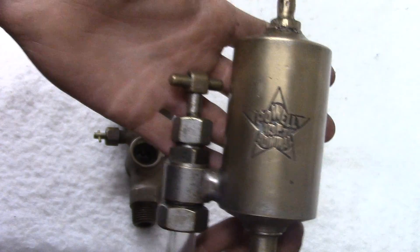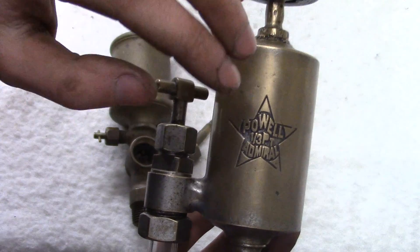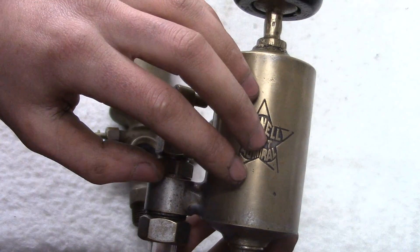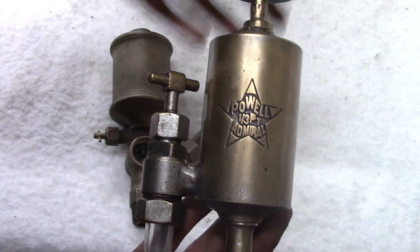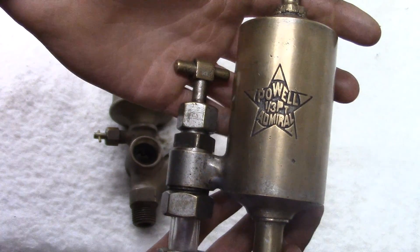I did some research on these types of oilers and I found that these were used for ammonia compressors. I'm not really sure why they were common on ammonia compressors, but that's what they were for.